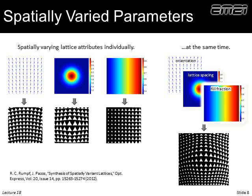Let's summarize the capabilities of this algorithm. We can make a map of how we want unit cells to be oriented in an arcing pattern. When we generate a spatially variant lattice, the spacing from unit cell to unit cell is very consistent, the size and shape of the triangles is consistent — the only thing we've changed is the arc of the orientation. Or maybe we wanted to bloat the lattice spacing in the middle of the lattice — we do that while keeping orientation and fill fraction the same.